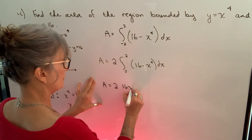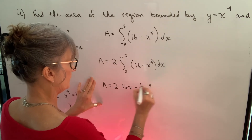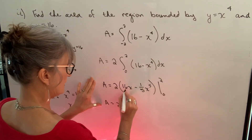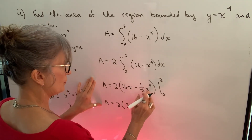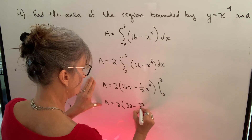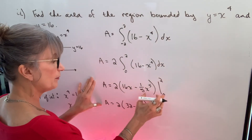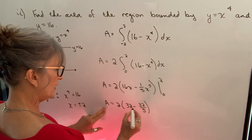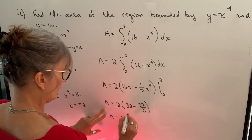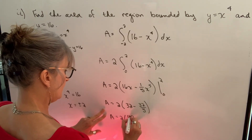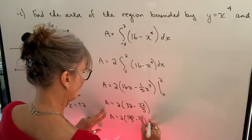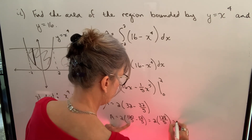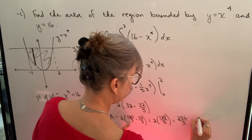Integrating gives 16x minus one fifth x to the fifth, and now we evaluate. Putting in 2: 16 times 2 is 32, minus 2 to the fifth which is 32 times one fifth giving 32 over 5. Putting in 0 gives zero. We need a common denominator: 32 equals 160 over 5, so 160 over 5 minus 32 over 5 equals 128 over 5. Multiplying by 2 gives the area as 256 over 5 square units.